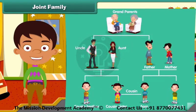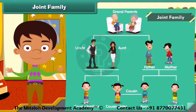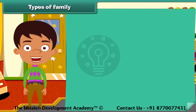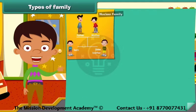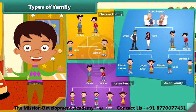Sam lives with his mother in a joint family. In a joint family, grandparents, uncles, aunts and cousins all live together with the parents and children of a nuclear family. So now you are able to identify whether it is a nuclear family, a large family, or a joint family.